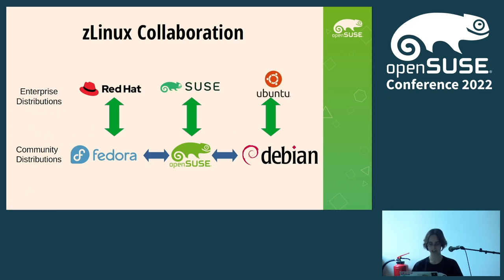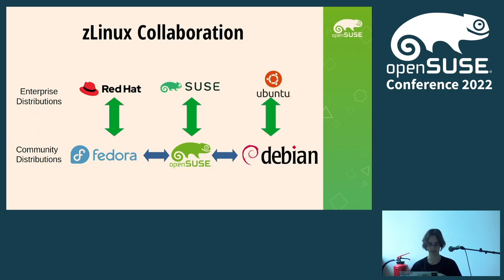IBM had supported mostly Red Hat, SUSE, and Ubuntu as enterprise distributions, while the community distributions were Fedora, OpenSUSE, and Debian. Everyone knows OpenSUSE is the foundation for SLES, just as Red Hat uses Fedora as a foundation and Ubuntu uses Debian. But we also have the relationship between community distributions — why shouldn't you contribute to multiple Linux distributions as a community member? This is how we have Fedora as our partner at this conference, and it sets the collaborative spirit of our Linux Distribution Working Group.